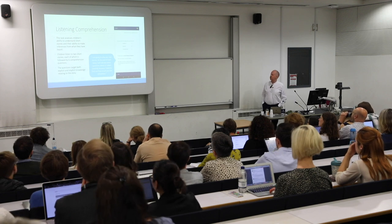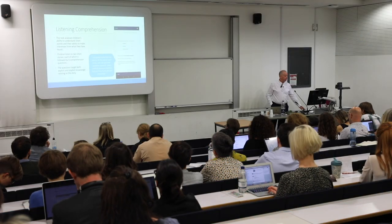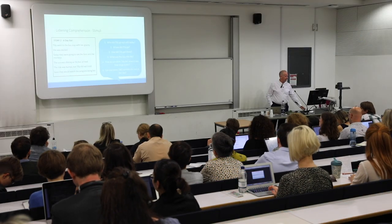Listening comprehension is a widely used measure of slightly higher-level language skills. The child hears a story read to them from the app, and after each of the two stories they're presented with six comprehension questions. Those questions target both explicit or literal knowledge about what happened in the passage, and also inferential knowledge — information not directly represented in the text.